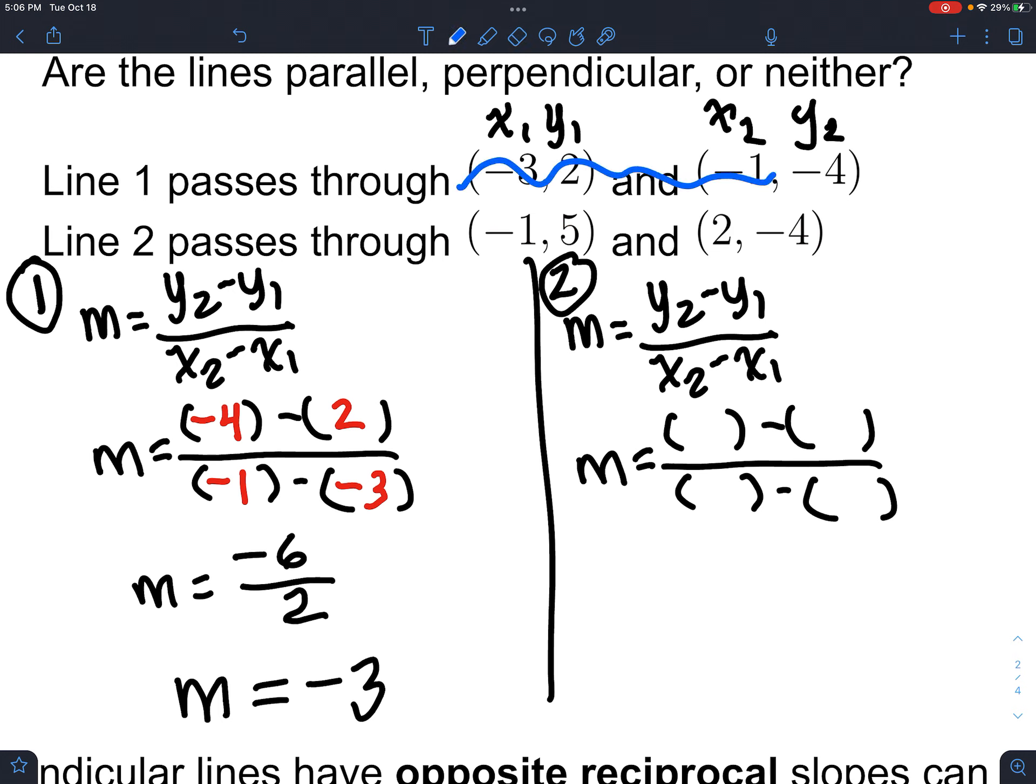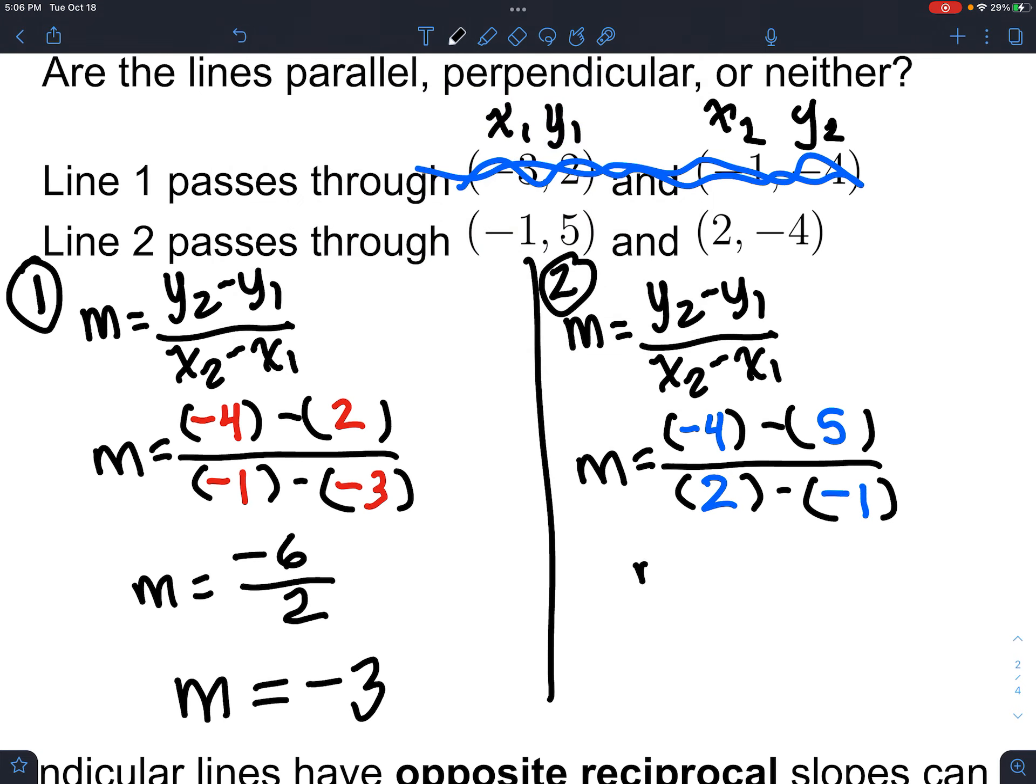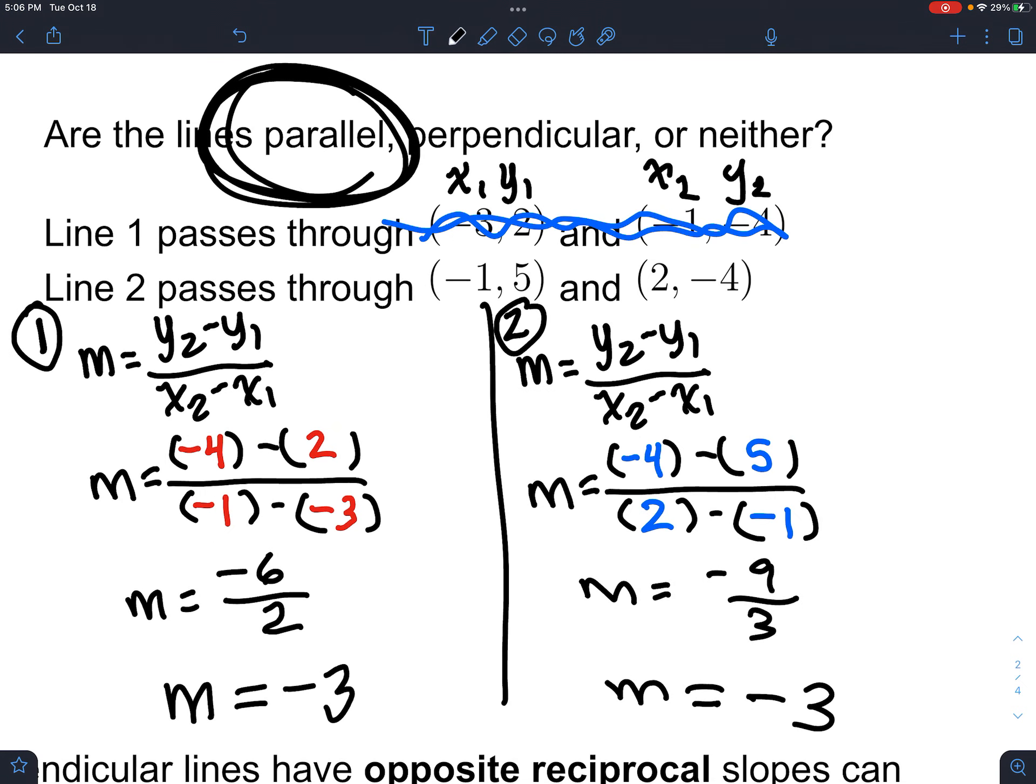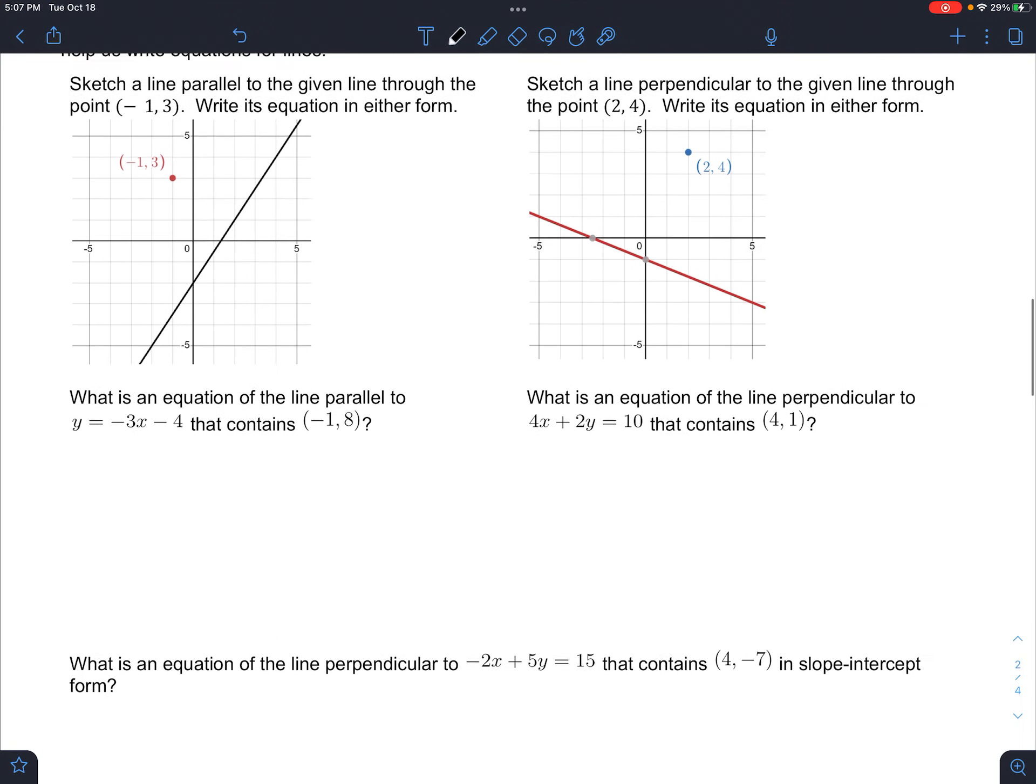And now, let's scratch off this. I already used that one. And then, I got y2 minus y1, x2 minus x1. So, after that work, I get minus 9 over 3, which is minus 3. So, the slopes are equal. So, they're parallel. Parallel lines have equal slopes. Perpendicular lines have opposite reciprocal slopes.